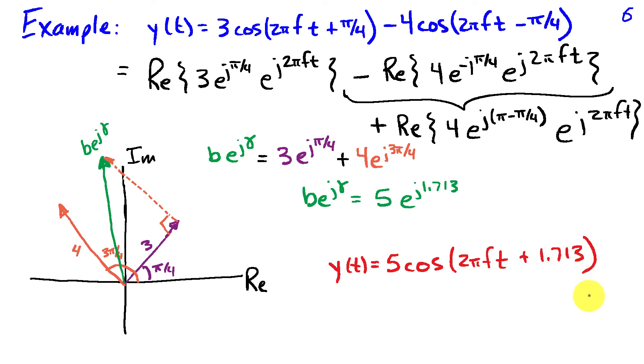So the phasor addition rule says that the phasor of a sum of sinusoids having the same frequency is equal to the sum of the phasors associated with each sinusoid. This is a very powerful result for analyzing a wide class of systems.